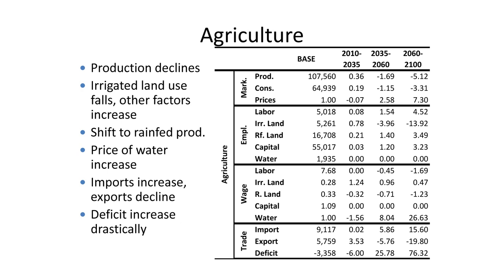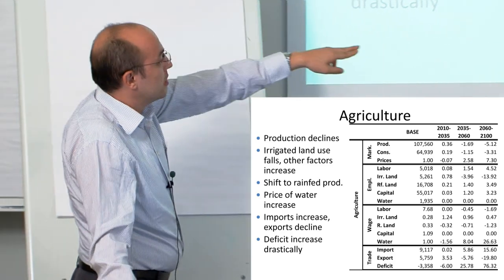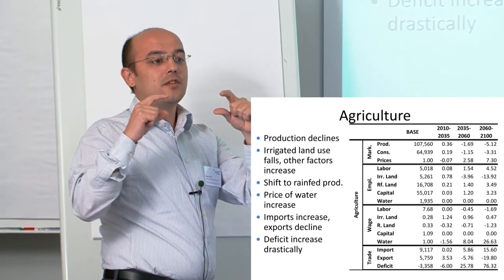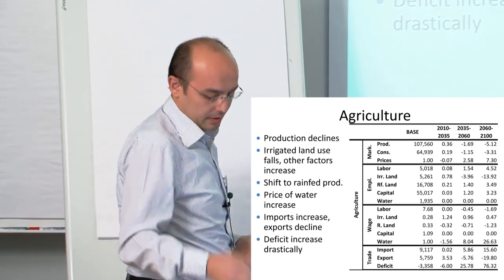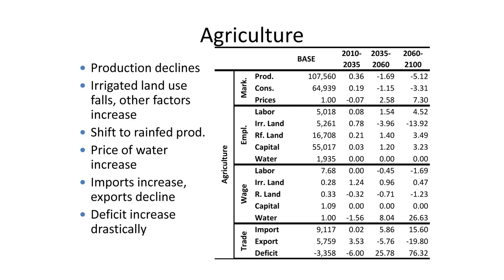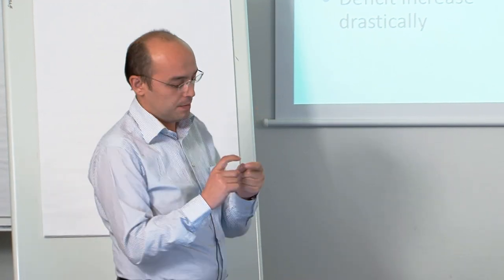These are results for the agricultural sector. Production declines and irrigated land use falls. Because of the new nest, water supply is a fixed factor, so water price increases significantly, 8% to 25%. The demand for irrigated land declines significantly. That's how this climate shock is translated in the factor market. Turkey tries to compensate the decline in production with imports. We increase imports and decrease exports, increasing trade deficit to compensate for production decline.